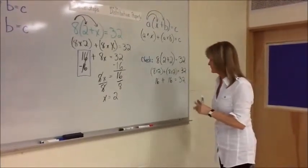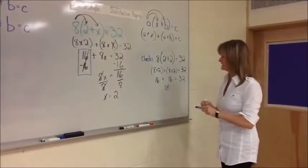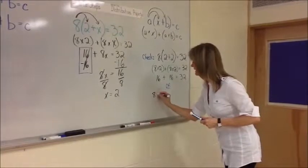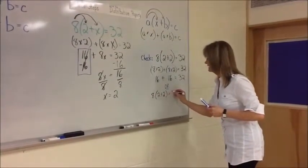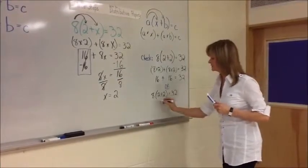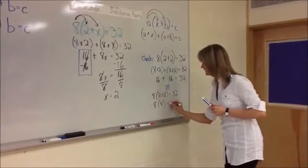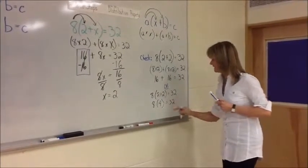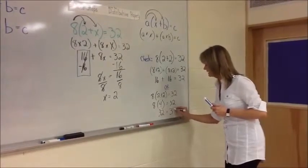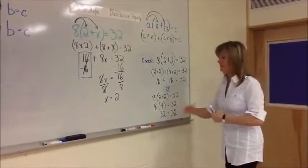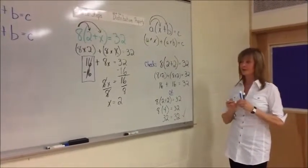So we could also, let's put a big OR here, because you can put it this way. You can do eight, and you're putting it into the original equation, equals 32. Well, two plus two is four. So eight times four equals 32. And you know that eight times four is 32. So 32 is 32. So that you absolutely know that that is your correct answer.